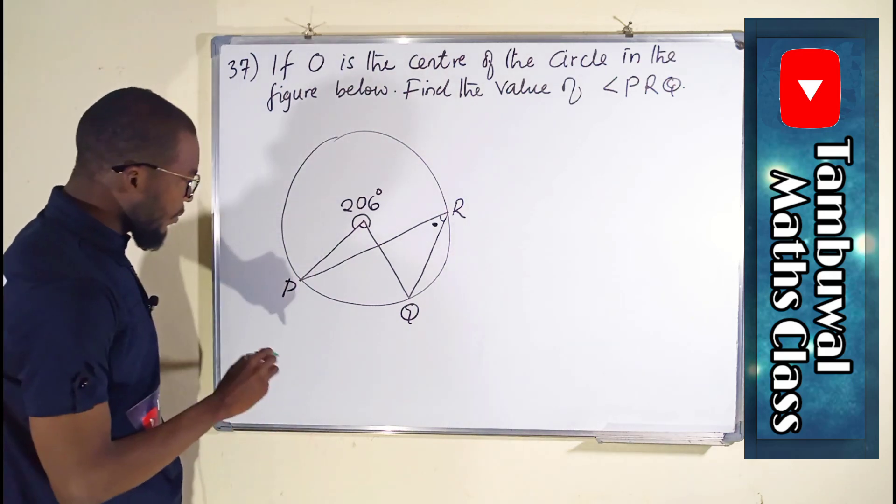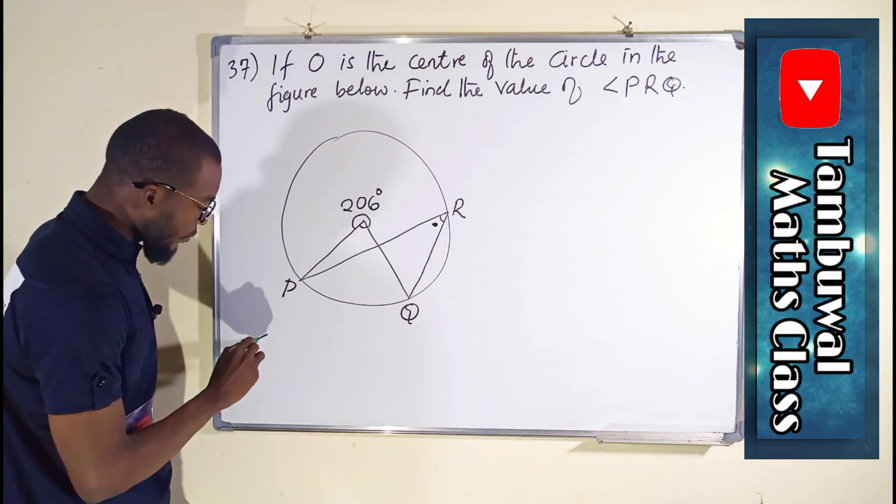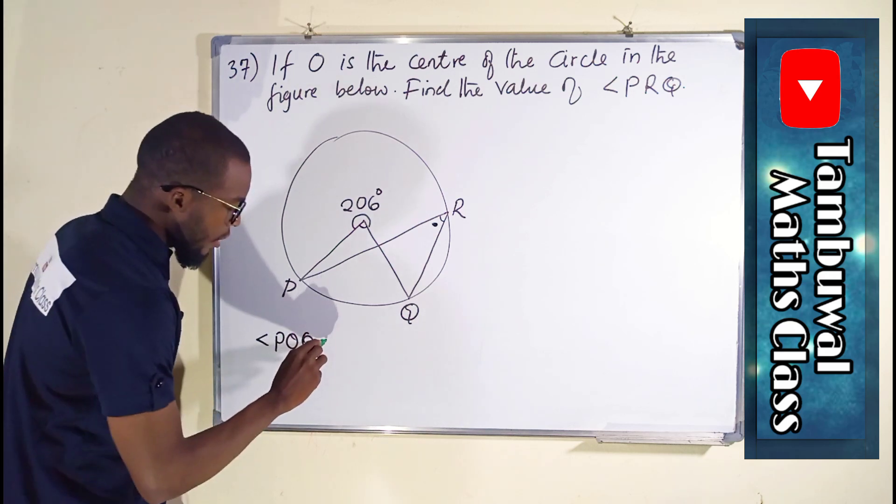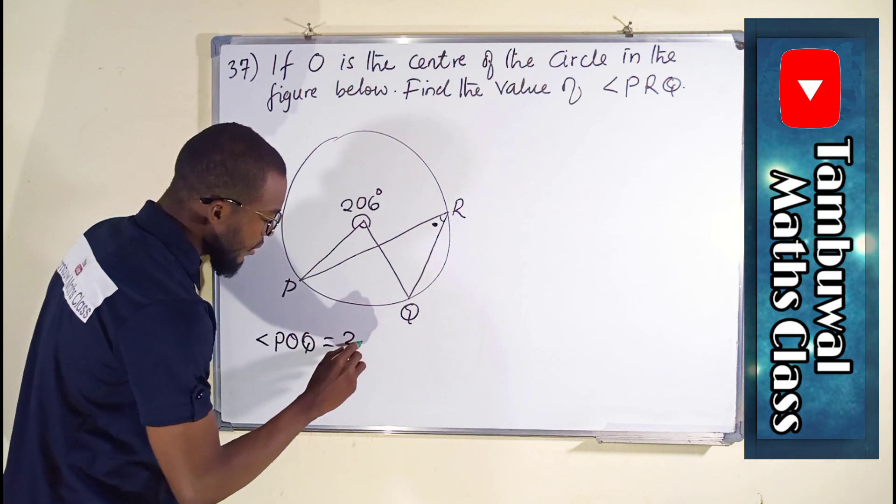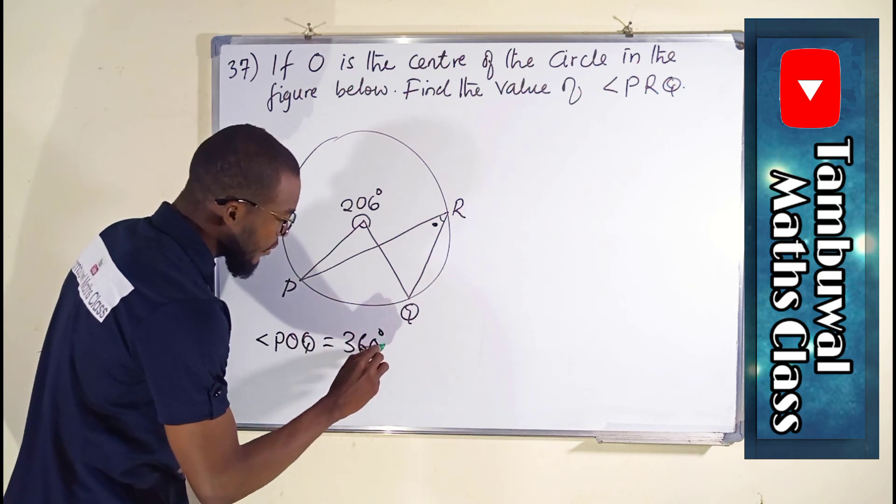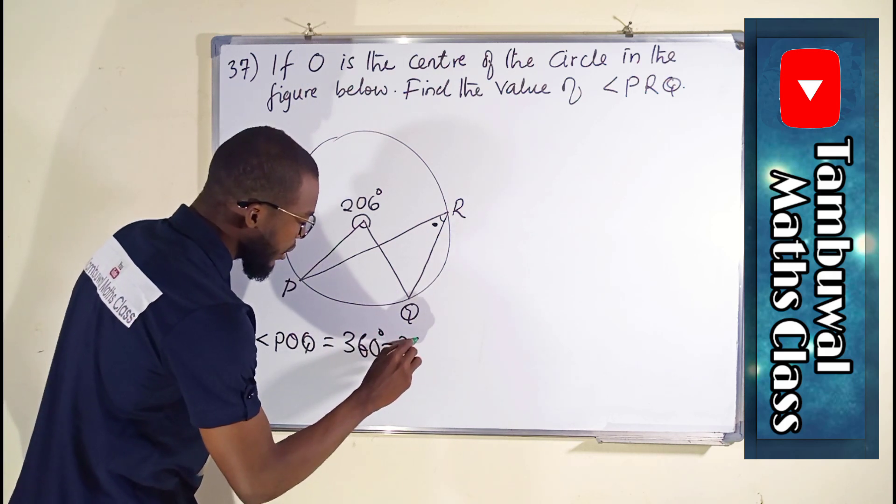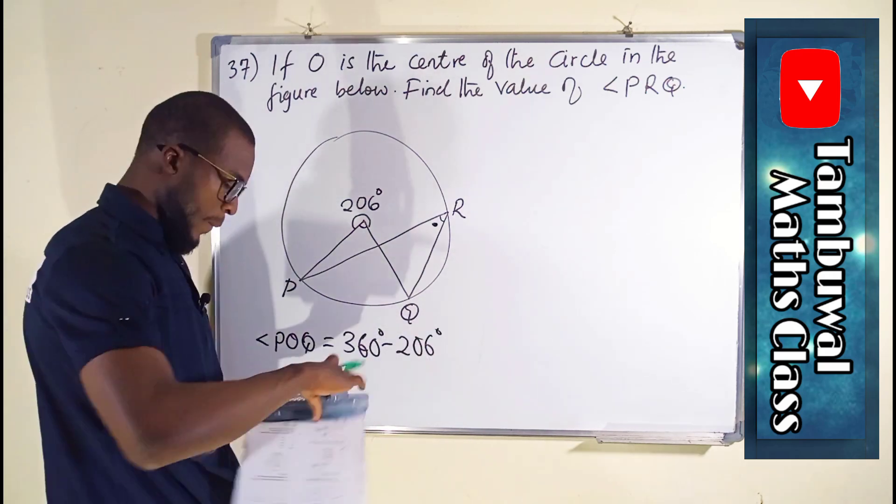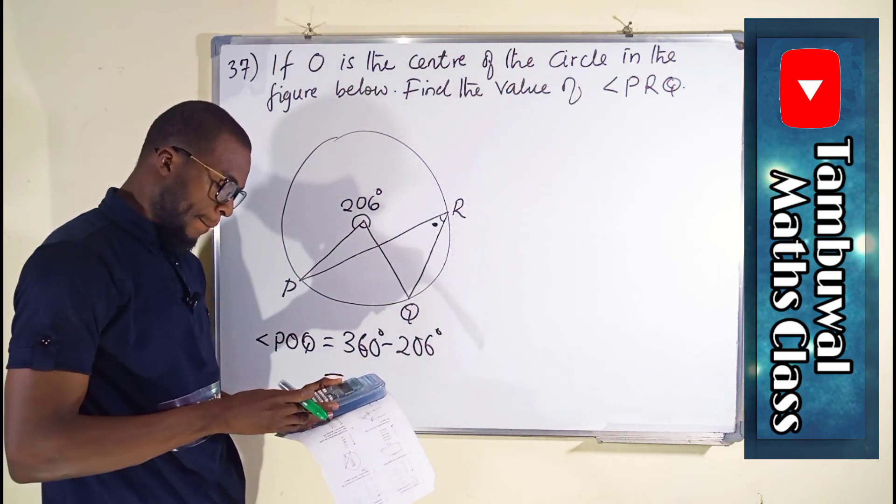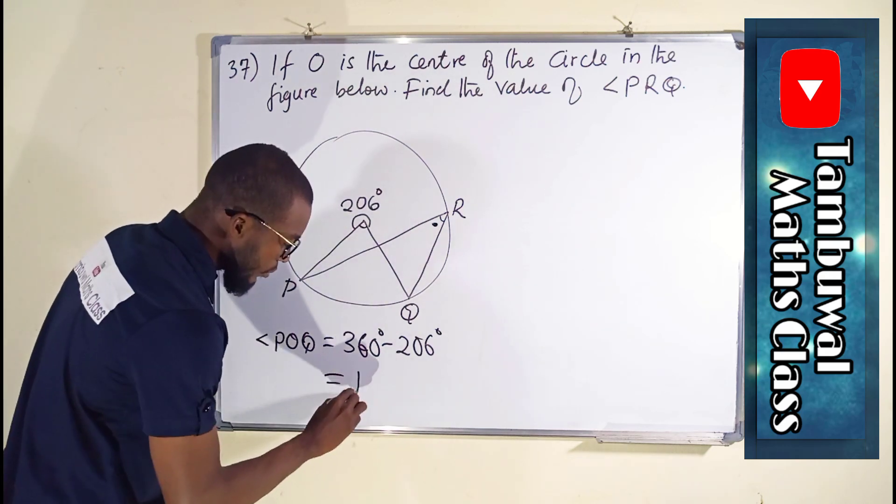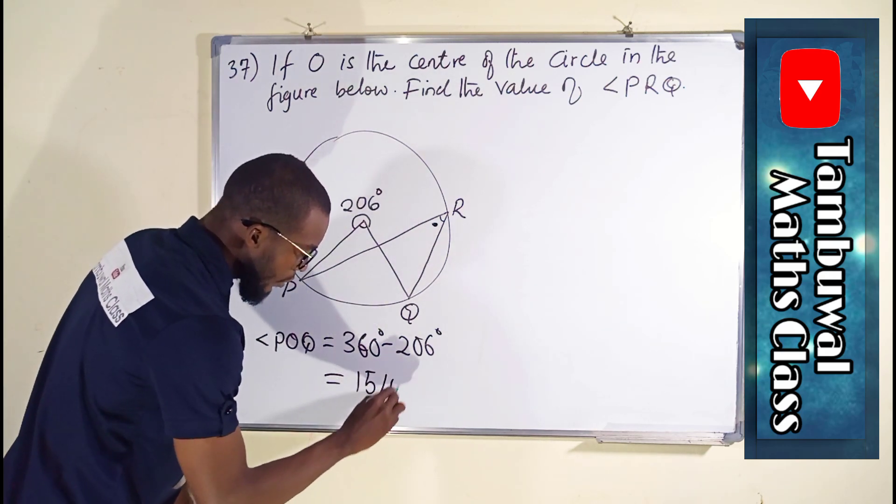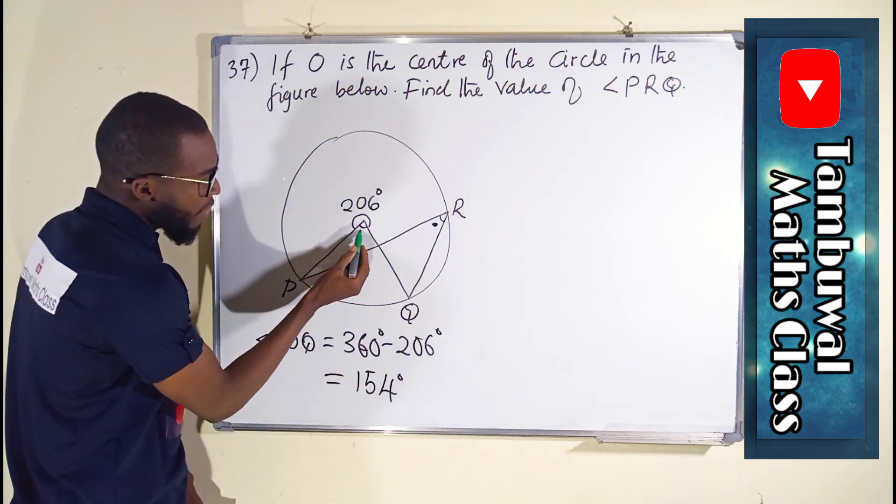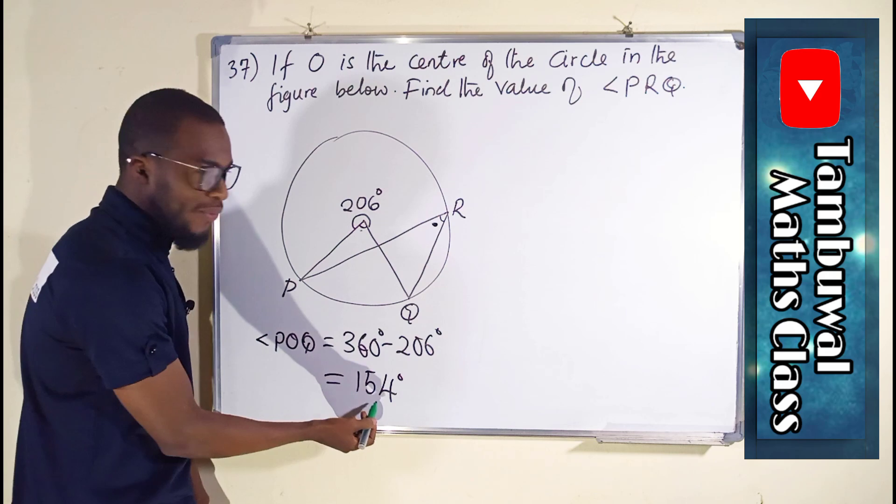So to do so, we can say angle POQ is equal to 360 degrees minus 206 degrees. And this is equal to 154 degrees. It means that this angle here is 154 degrees.